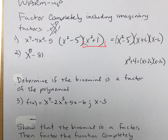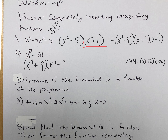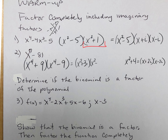Is it cubes or is it squares? It's squares — 81 is a perfect square, and 8 is a multiple of two, not a multiple of three. So we have (x to the fourth plus nine) and (x to the fourth minus nine).